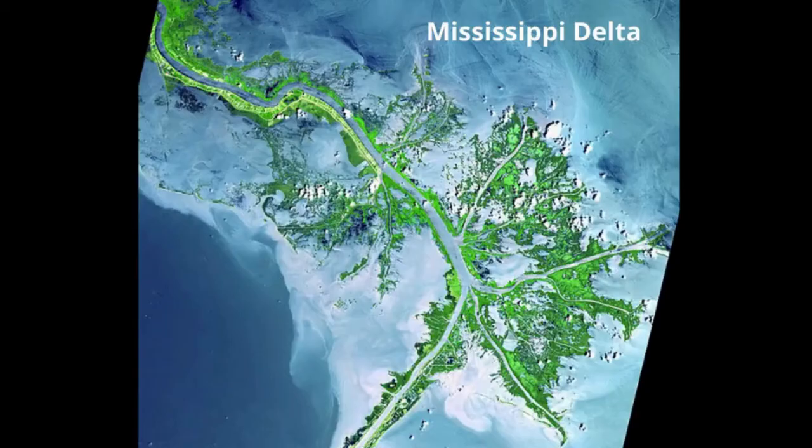A bird foot delta has few widely spaced distributaries making it look like a bird's foot. The Mississippi River is an example.